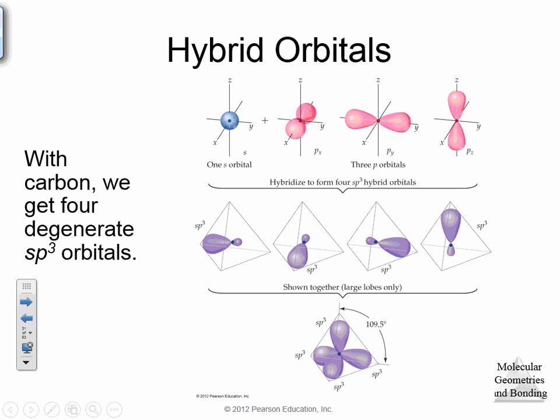If we have something like carbon, we're going to get four degenerate SP3 hybrids. Carbon is in the P orbital. You have S, and then there are three different P orbitals — one on the X, one on the Y, and one on the Z axis. When they combine together: S combines with X to give one hybrid, X combines with Y to give another, S combines with P to give another — it shows you how those four SP3 orbitals work.